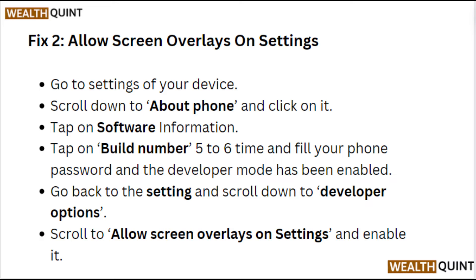Fix 2: Allow screen overlaying on settings. Go to Settings, scroll down to About Phone and click on it. Tap on Software Information, then tap on Build Number 5 to 6 times. Enter your phone password and developer mode will be enabled.